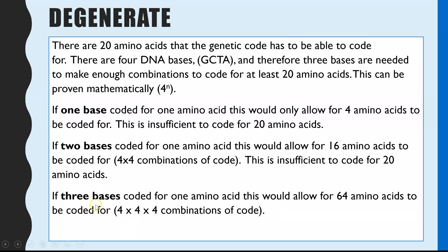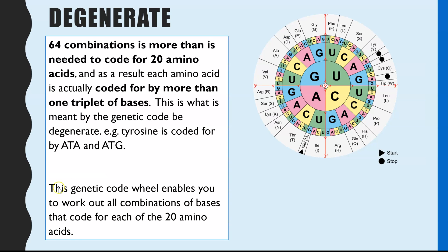That's one of the ways they realized the genetic code is three bases coding for one amino acid. However, 64 combinations is more than the 20 needed to code for amino acids, and this results in the first feature: the fact that it is degenerate. What that means is each of those 20 amino acids are coded for by more than one triplet of bases — there's more than one code for each amino acid. For example, tyrosine is coded for by both the triplets ATA and ATG.